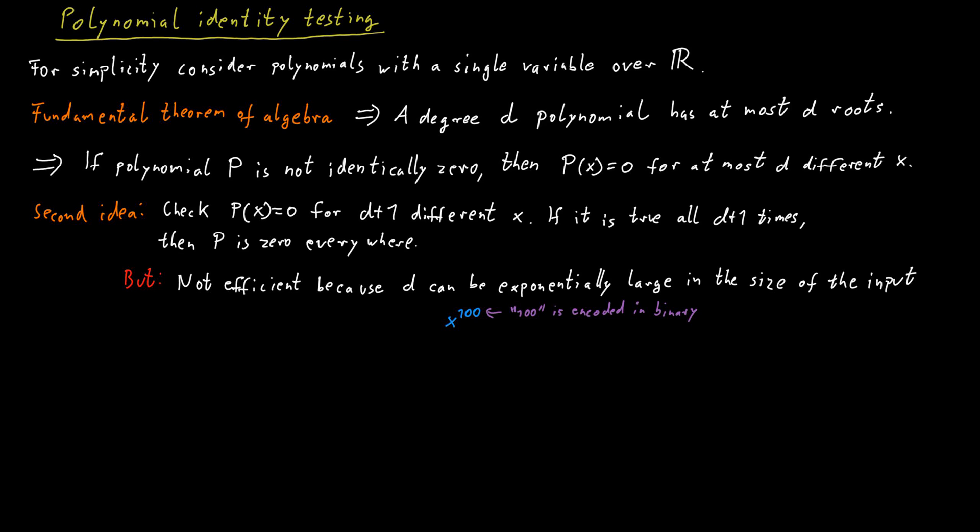So if our algorithm evaluates the polynomial d+1 times for d+1 different values of x, then that will take exponential time potentially. So this doesn't quite work. We cannot be quite as wasteful. We can only evaluate the polynomial in a few different places, not d+1 many.